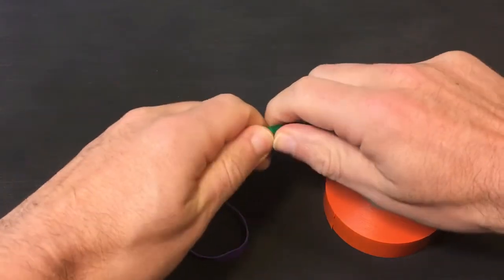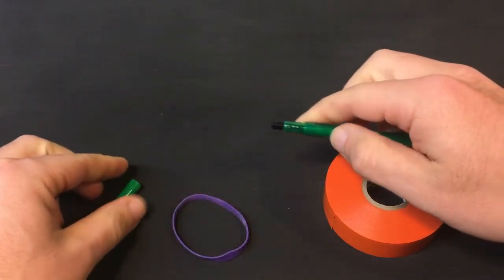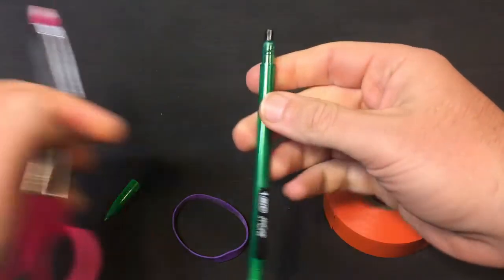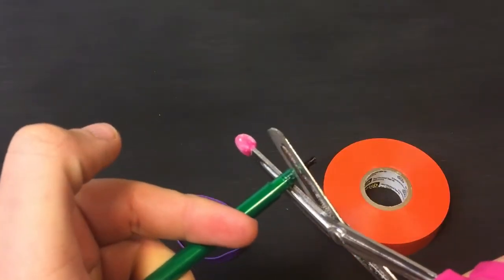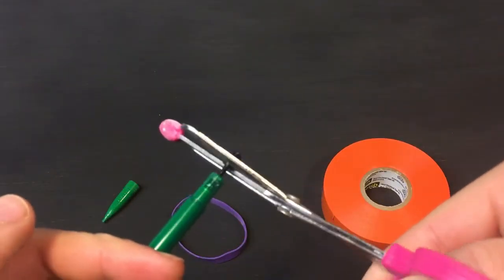First, we'll need to remove the non-essential parts of the pencil. Take the tip off of the pencil, push down the eraser so the part which dispenses the lead pops out. Then use a pair of scissors to remove it.